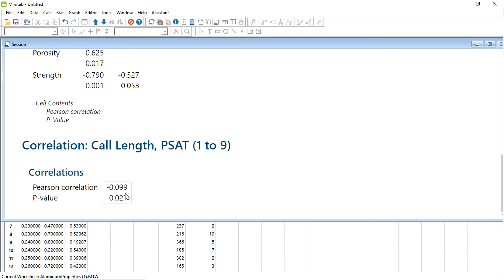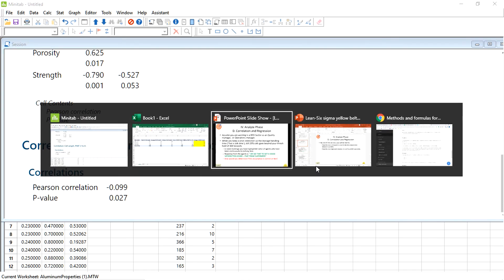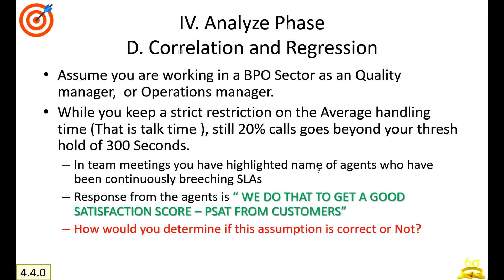Now let me take call length and PSAT. So now you can see the correlation suggests there is a negative correlation, but the p-value is not significant. It is not greater than 0.05, so we cannot say that there is any relation between the call length and the PSAT based on this data. That's how correlation helps you operationally to take decisions in your own job day-to-day. You can do it in Excel also.